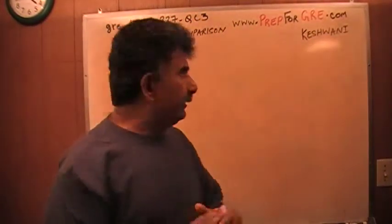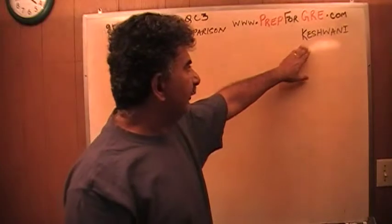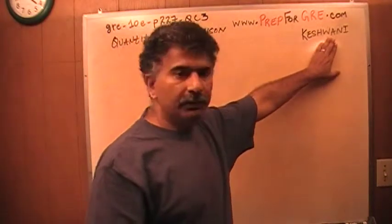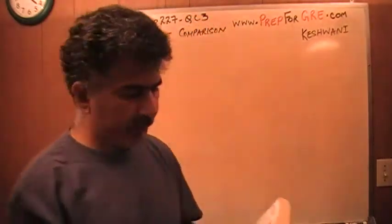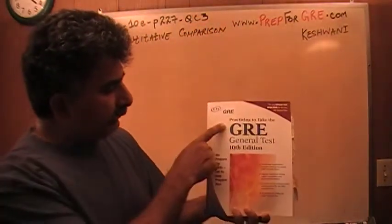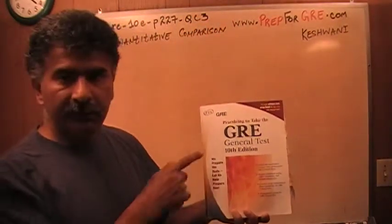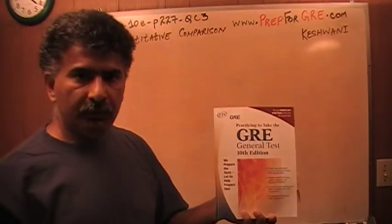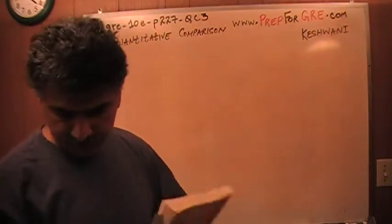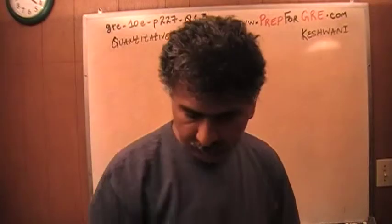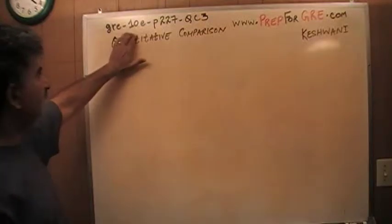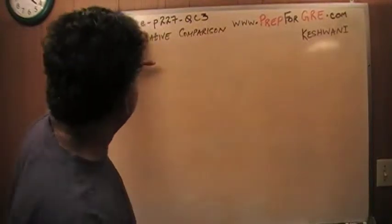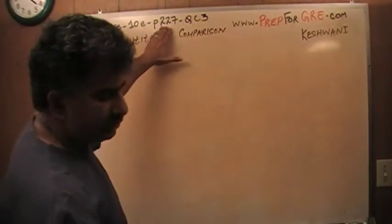Hello, my name is Keshwani — that's K-E-S-H-W-A-N-I. I have been solving math problems for GRE out of this book. Practicing to take the GRE general test, the 10th edition. If you do not own this book already, purchase it immediately. The problem I'm about to solve is on page number 227. The tag you want to use is GRE-10E for the 10th edition of the book, page 227.